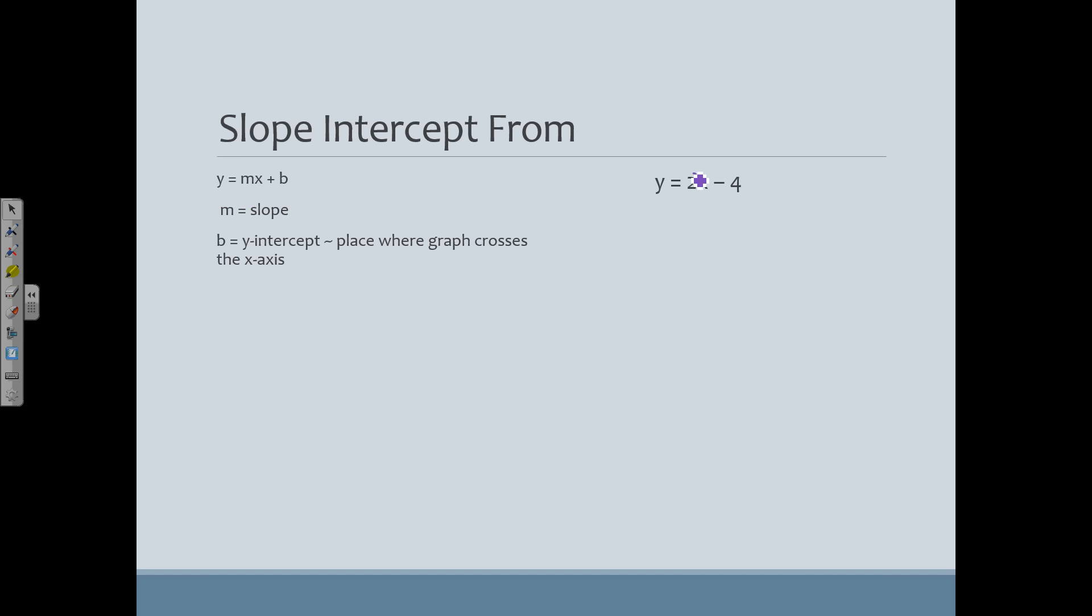So in this case here, I've got a slope of 2 or 2 over 1. Because this is subtraction, I've got a y-intercept of negative 4. So I have a slope of 2 over 1 and a y-intercept of negative 4 or the point (0, negative 4).